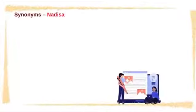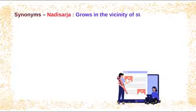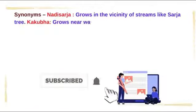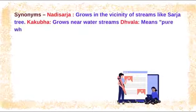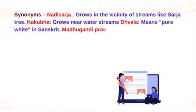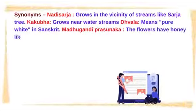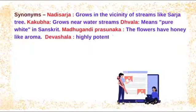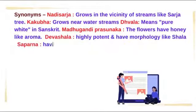Synonyms: Nadi Sarjaha – grows in the vicinity of streams like the Sarja tree. Kakubaha – grows near water streams. Dhavalaha – pure white in Sanskrit. Madhugandi / Prasunakaha – the flowers have a honey-like aroma. Devasalaha – highly potent with morphology like Saala.